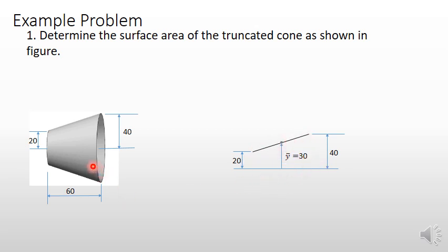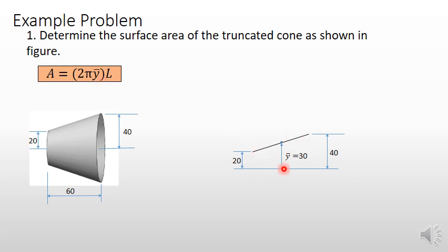If you revolve this entire line for 360 degrees about this axis, you will get this surface. The area of this surface can be obtained using the Pappus-Guldinus relation, A = 2π·ȳ·L, where ȳ is the distance of the centroid of this line from the axis of revolution.